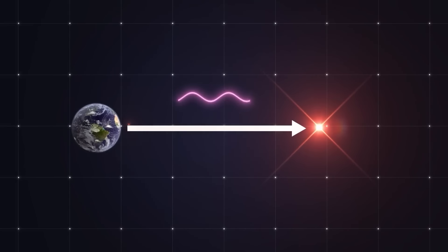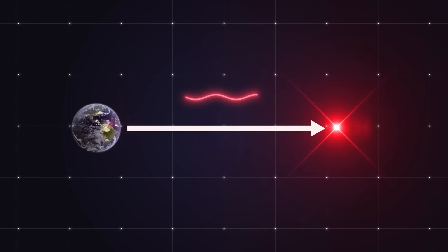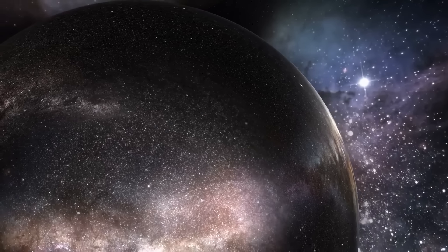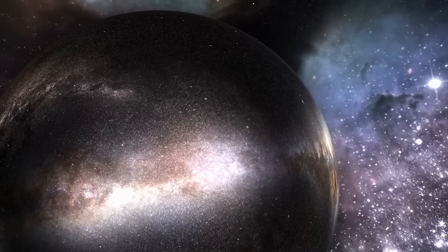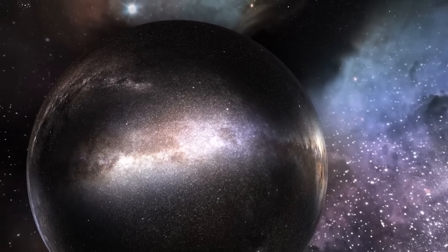This observable universe, however, only includes light that has had enough time to reach us. Any objects beyond this horizon remain invisible to us due to the limitation imposed by the speed of light.